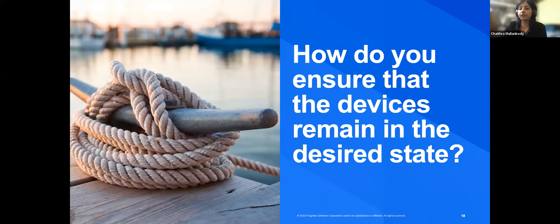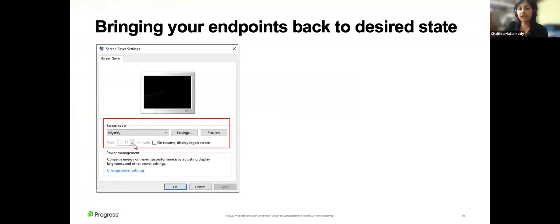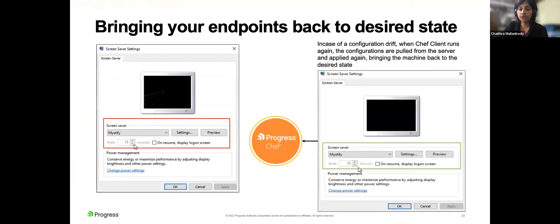How do you ensure devices are configured the way you want, or bring a device back to the desired state if settings get manipulated? Going back to the screensaver example: if the screensaver timeout gets modified by a user and is now set to 15 minutes instead of 10 minutes, when the next Chef Client run is scheduled, it pulls the cookbook again from the Chef server and applies the configuration specified in the cookbook — which is 10 minutes — thus bringing the device back to the desired state. Chef automatically corrects drifts and maintains devices in the desired state.